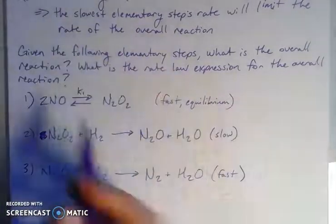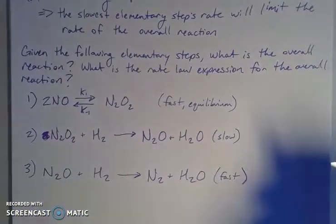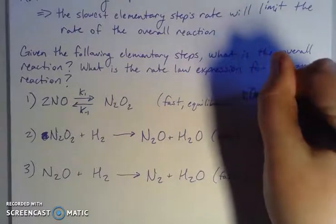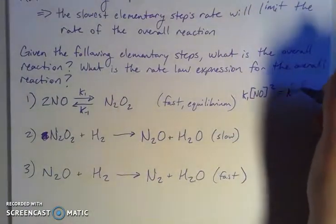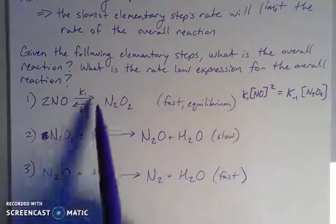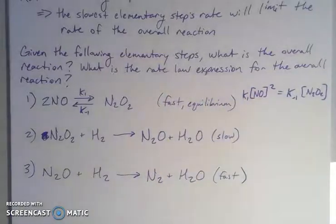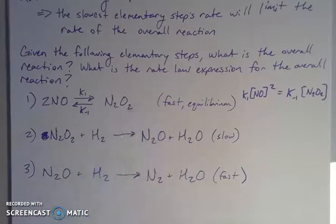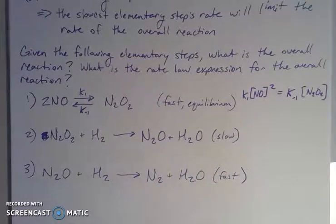Equilibrium means the rate of the forward reaction equals the rate of the reverse reaction. So the rate in the forward direction, k₁ times [NO]², is equal to the rate in the reverse direction, k₋₁ times [N₂O₂]. This is an equality from the fact that this is an equilibrium. This is rate 1 going forward and rate₋₁ going in reverse. This is happening fast, so it won't limit the overall process, but it may be important as we go.